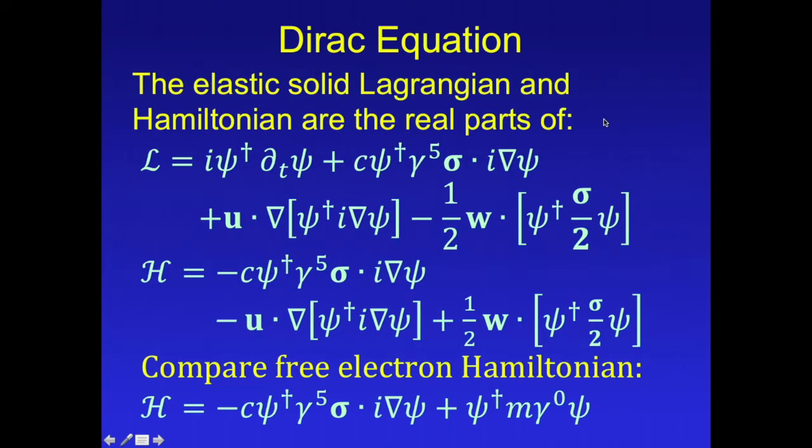The elastic solid Lagrangian and Hamiltonian are the real parts of these two expressions, and you can compare that with the Hamiltonian for a free electron, in which case the only difference is that the nonlinear terms are replaced by this gamma-0 term, the mass term.